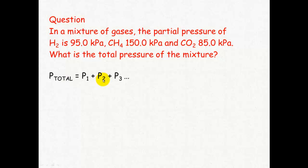P total equals P1 plus P2 plus P3. So it equals the pressure of hydrogen plus the pressure of methane plus the pressure of carbon dioxide. So 95 for hydrogen, methane is 150 plus 85 for carbon dioxide. We get a total pressure of 330 kilopascals. Remember these must be in the same units.